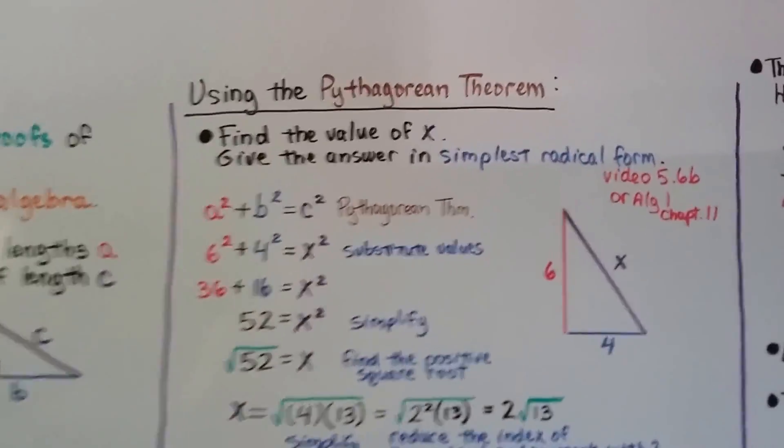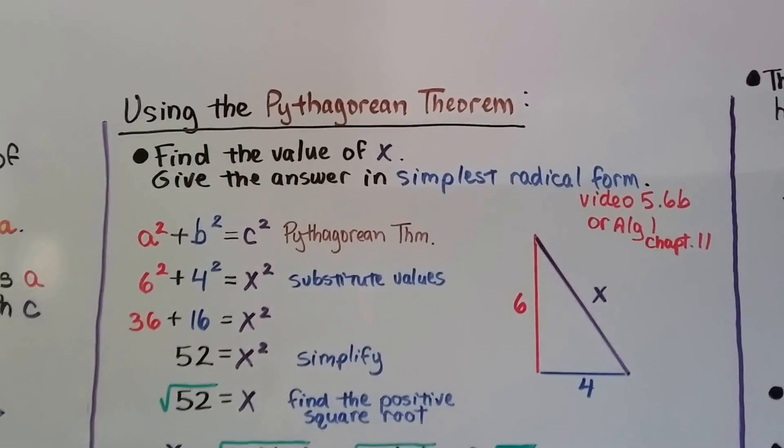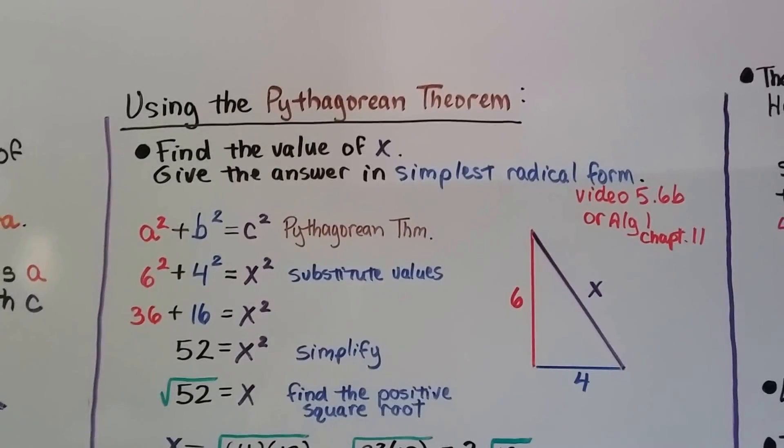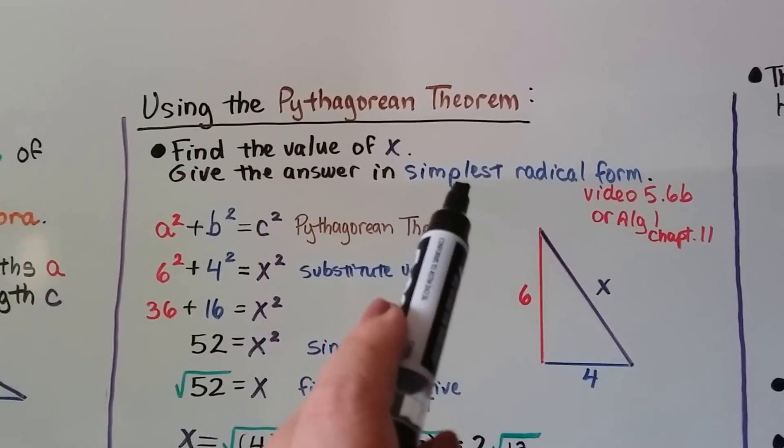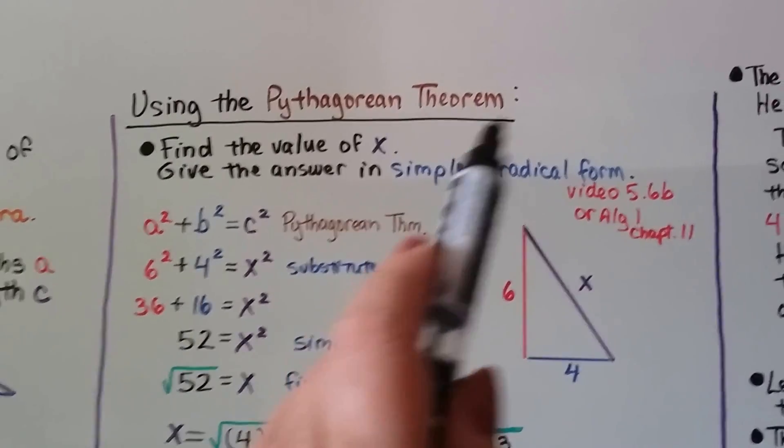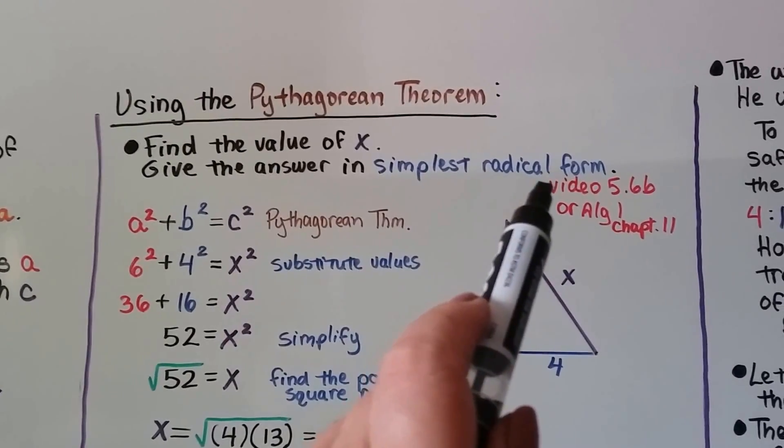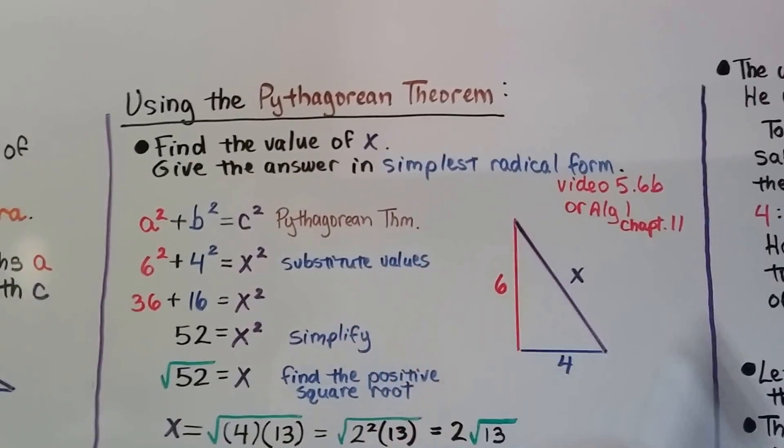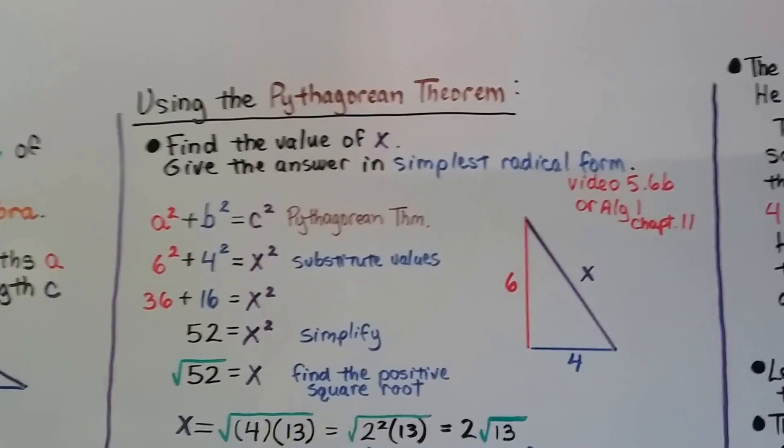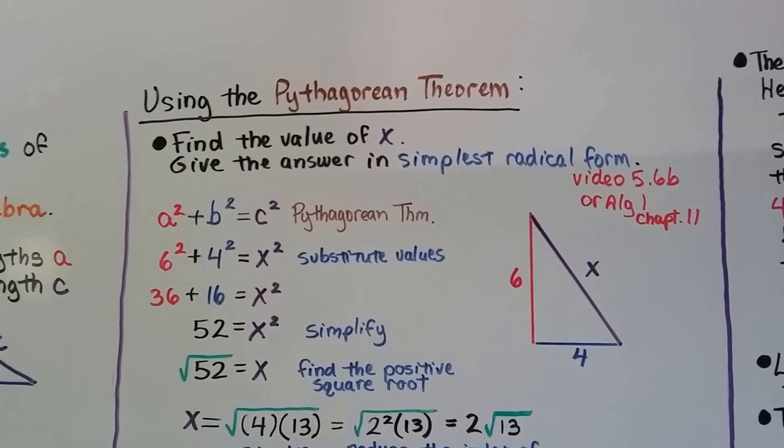Here's using the Pythagorean theorem. We can find the value of x and give the answer in the simplest radical form. Now, if you don't know how to do the simplest radical form or you've forgotten it from Algebra 1, if you just need a good reminder, you can watch the previous video from this one, 5.6b, because we went over that a little bit. Or you could watch the link to the Algebra 1, in chapter 11, where it talks all about learning about radicals.